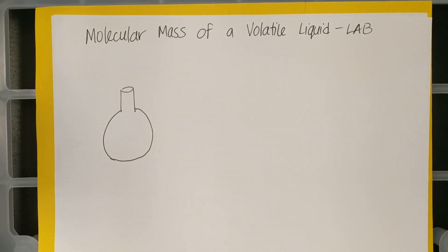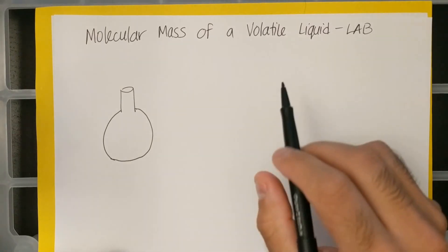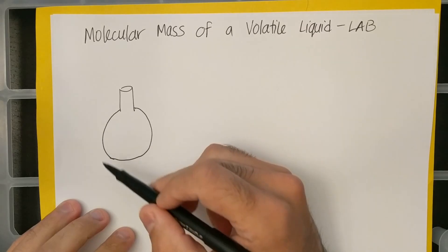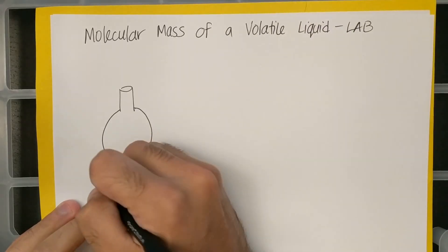All right, hey AP Chemistry. Just wanted to talk a bit and debrief about the lab that you performed on Friday. So the lab was called Molecular Mass of a Volatile Liquid, and you used this Florence flask.